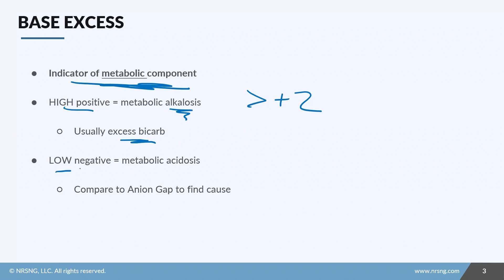If we have a low negative level, which means a level less than negative two, this indicates metabolic acidosis. This means we have a deficiency of base in our blood or a state of acidosis. Remember that metabolic acidosis could be caused by too many acids or by not enough base.